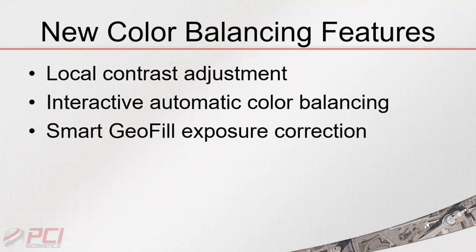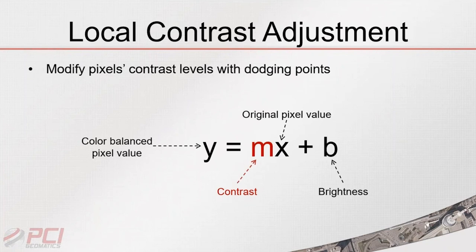The last set of new features relates to our mosaicking and color balancing capabilities, which is one of our leading technologies that we continue to develop. Recent improvements have completely reshaped our technology, producing truly impressive results. In 2016 we've added three new features to help produce higher quality ortho mosaics: local contrast adjustment using dodging points, interactive automatic color balancing with dodging points, and exposure correction with the smart geofill tool.